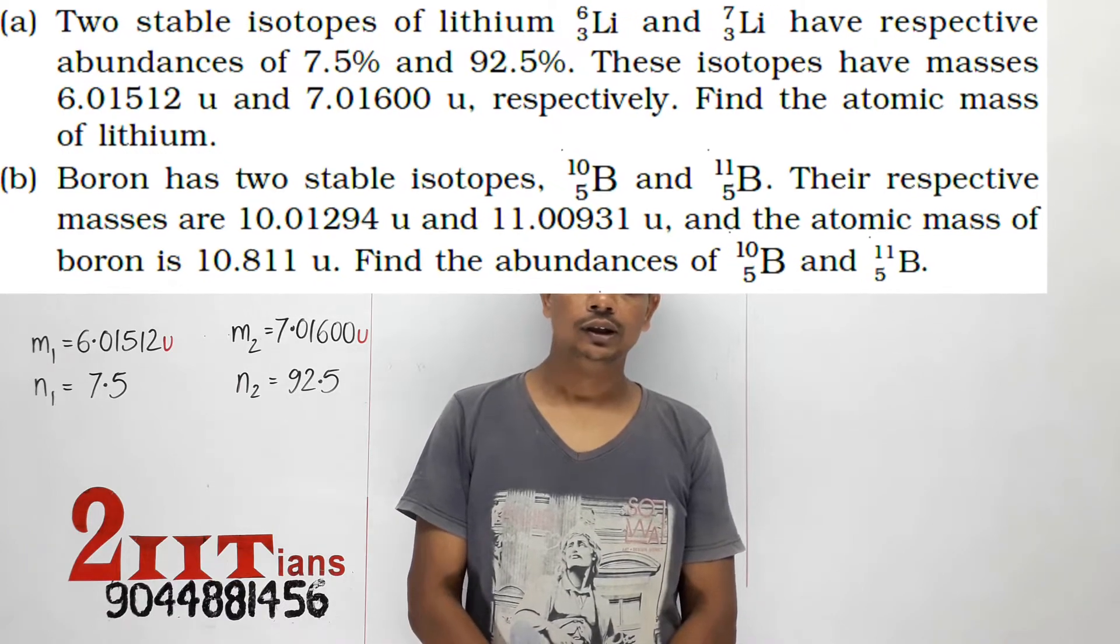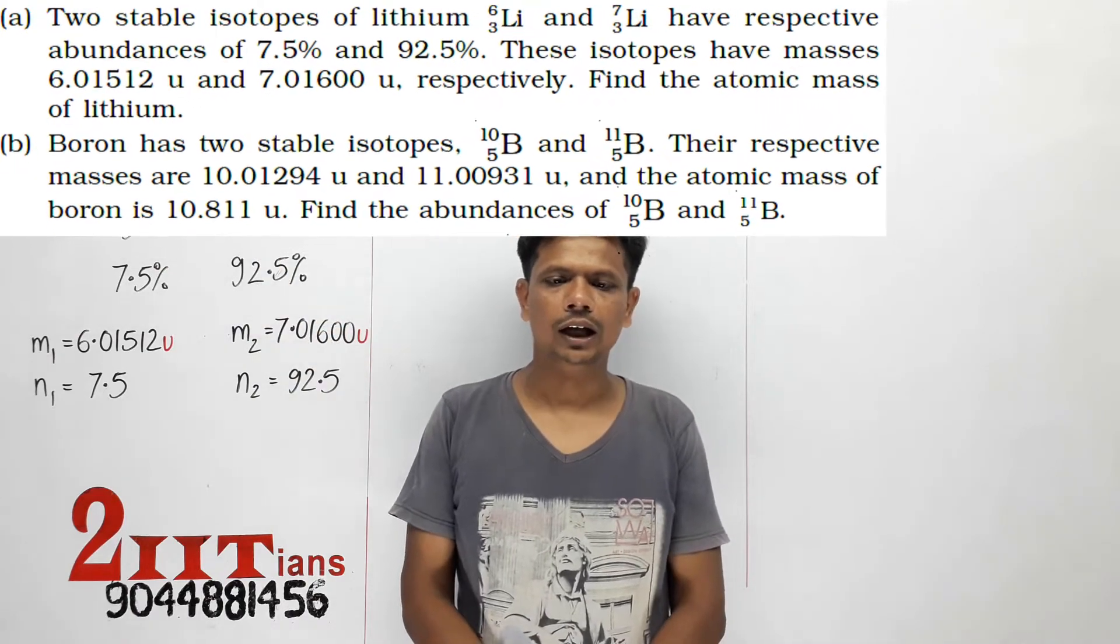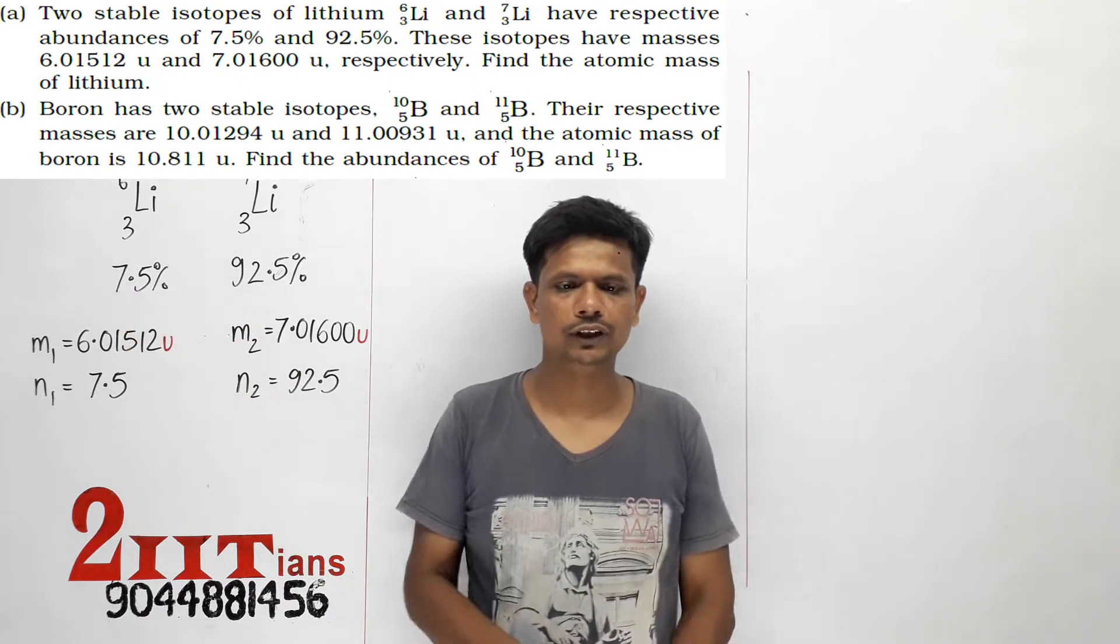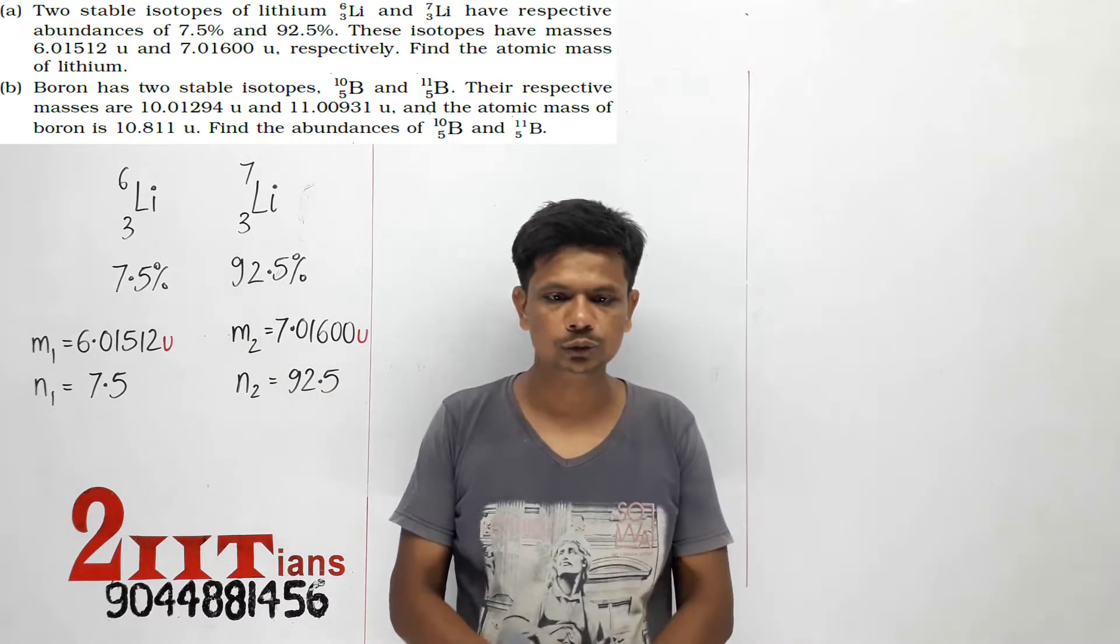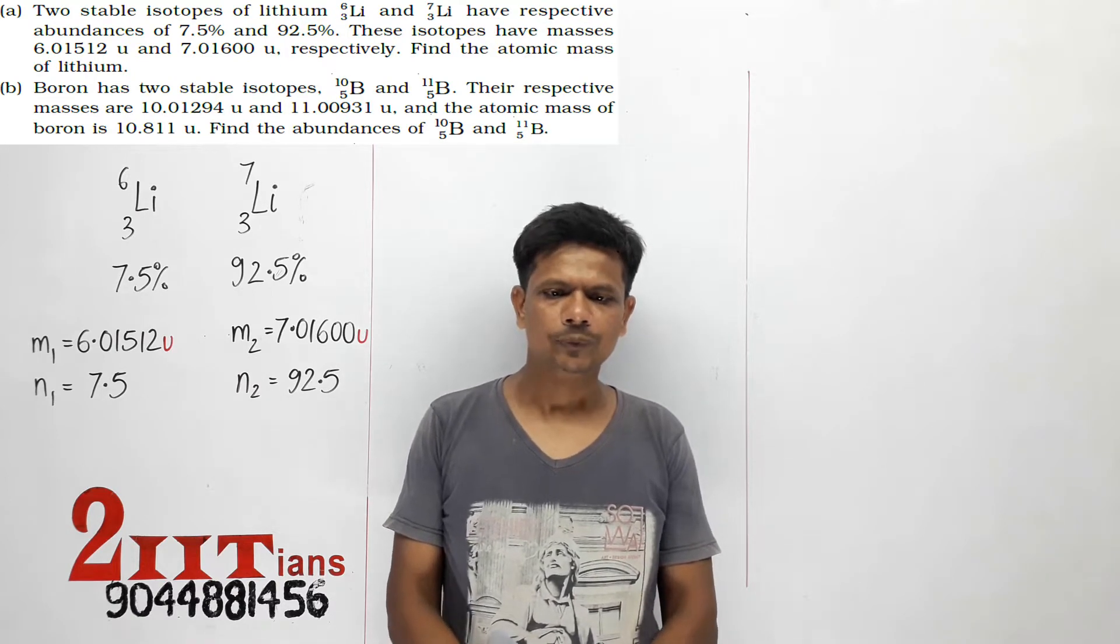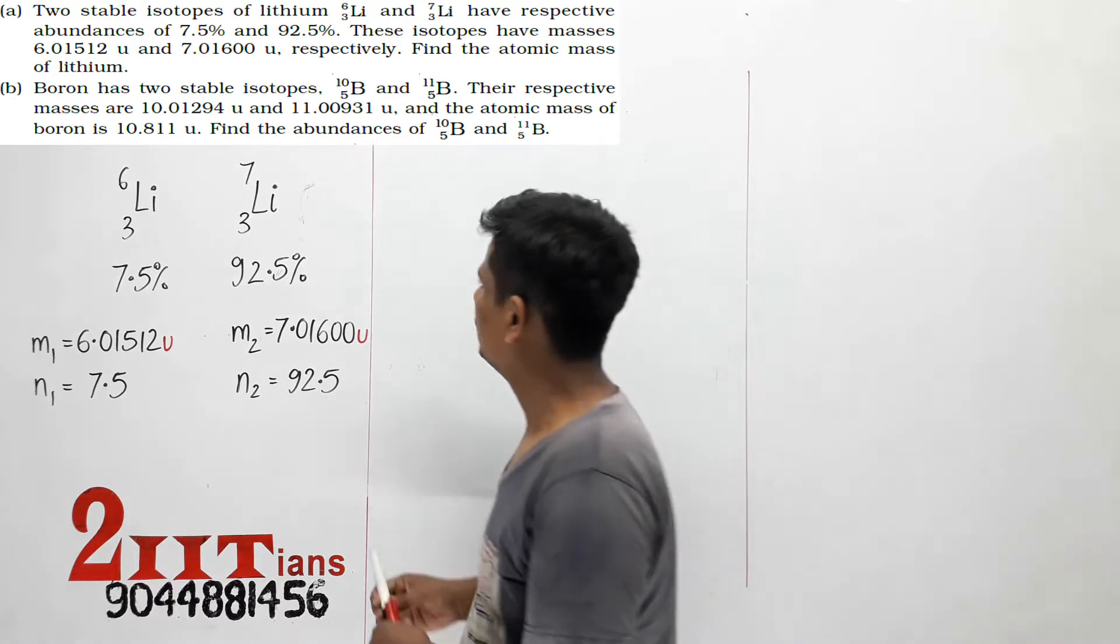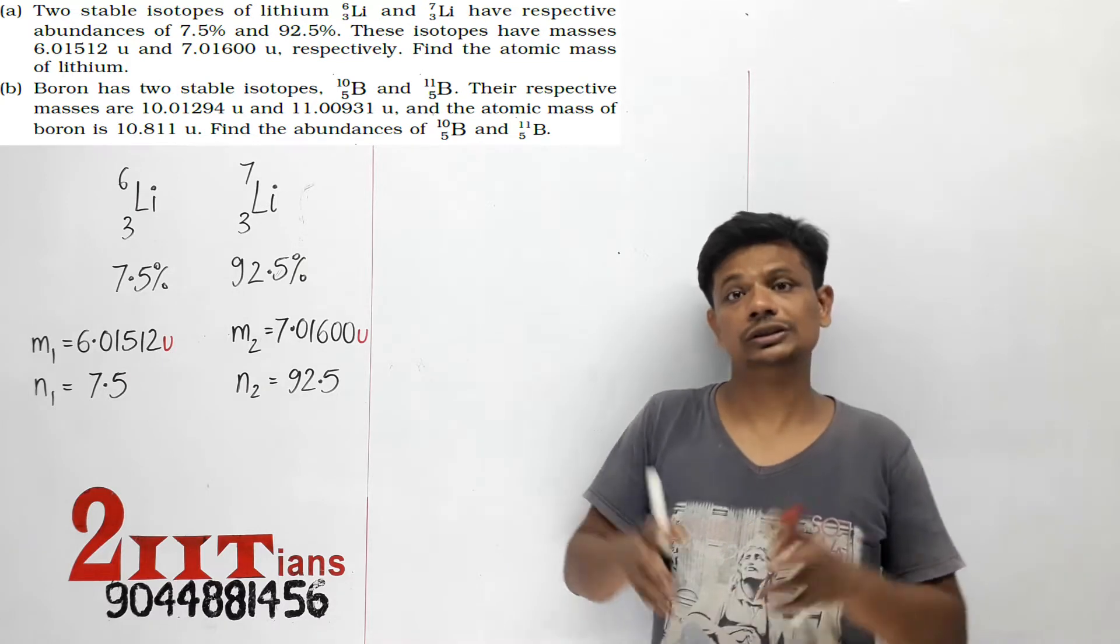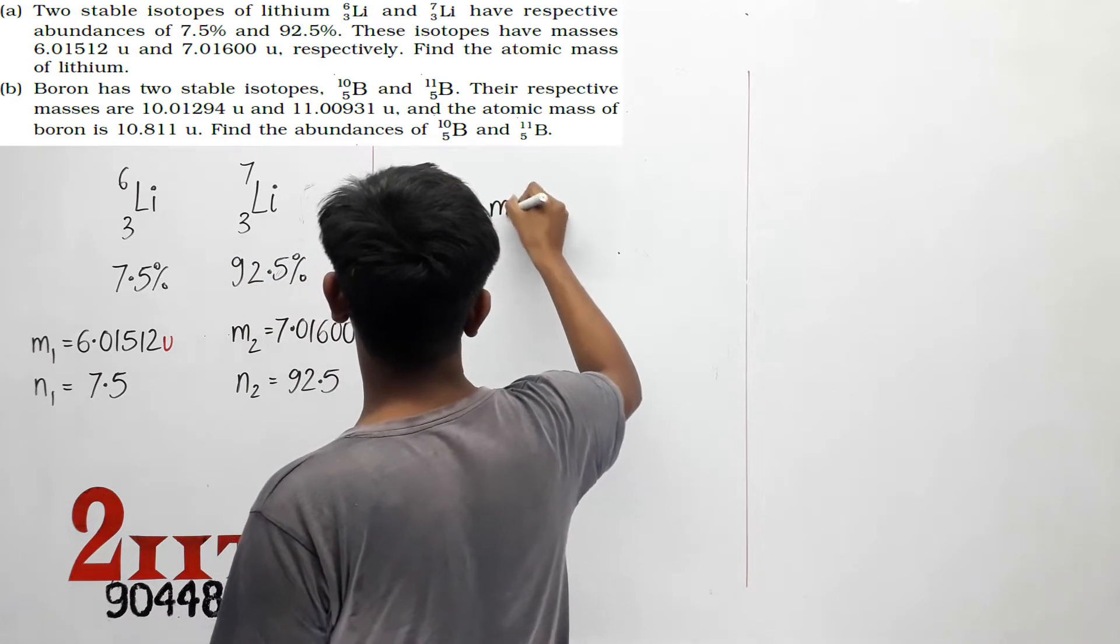Two stable isotopes of lithium, ⁶Li and ⁷Li, have respective abundances of 7.5% and 92.5%. These isotopes have masses given in atomic mass units (amu). The isotopes have this distribution, and here there are two of them.